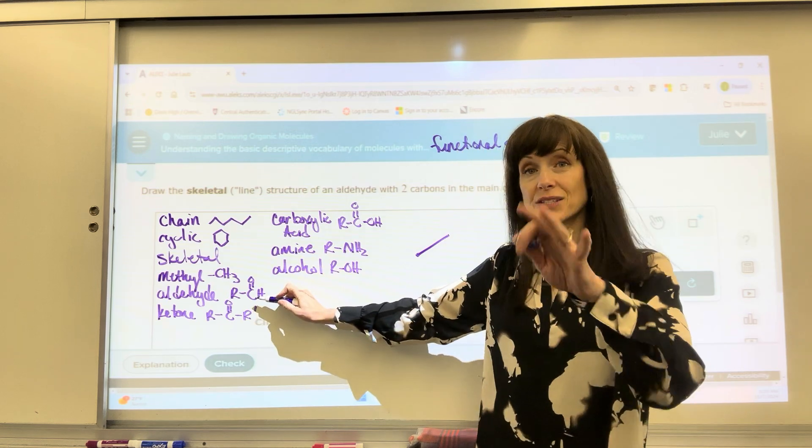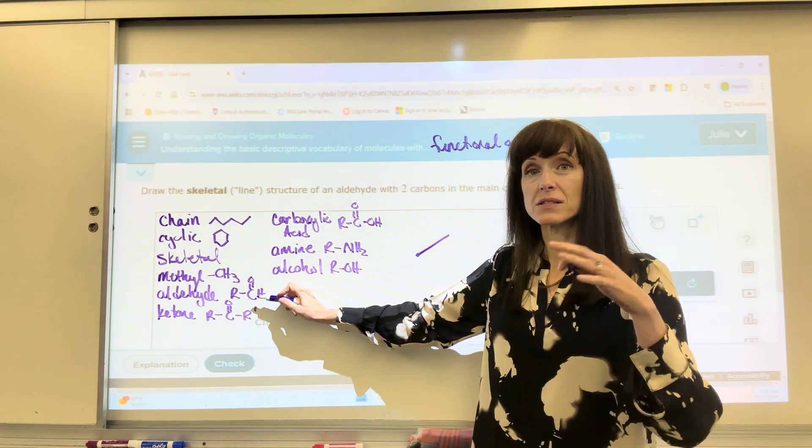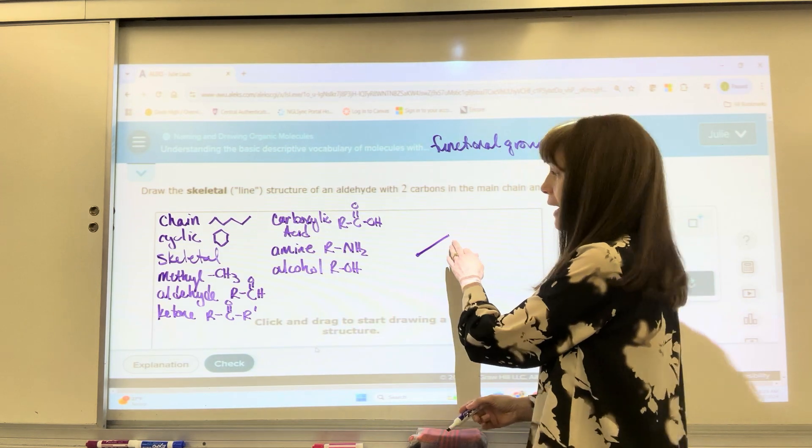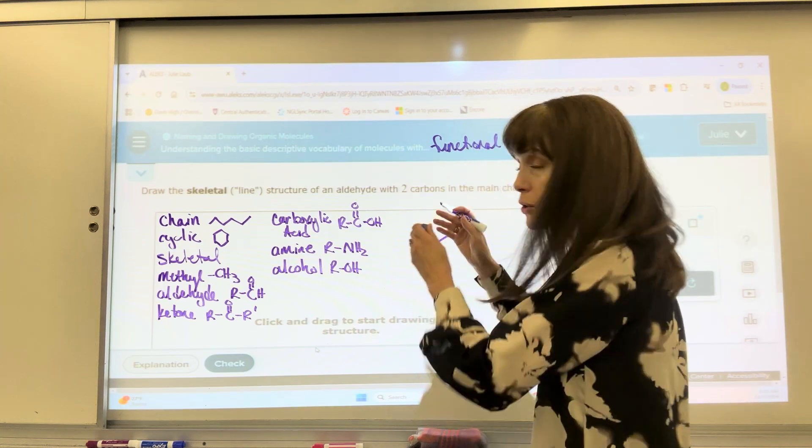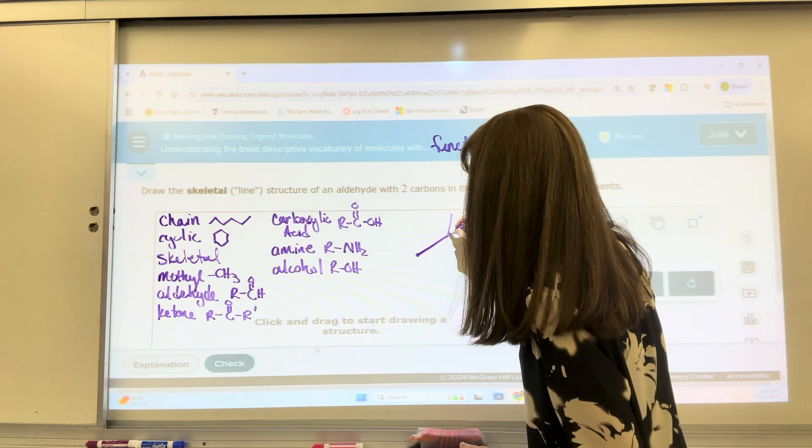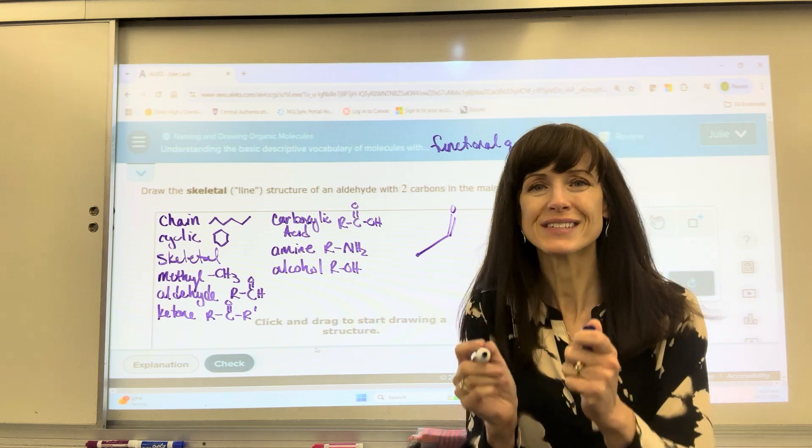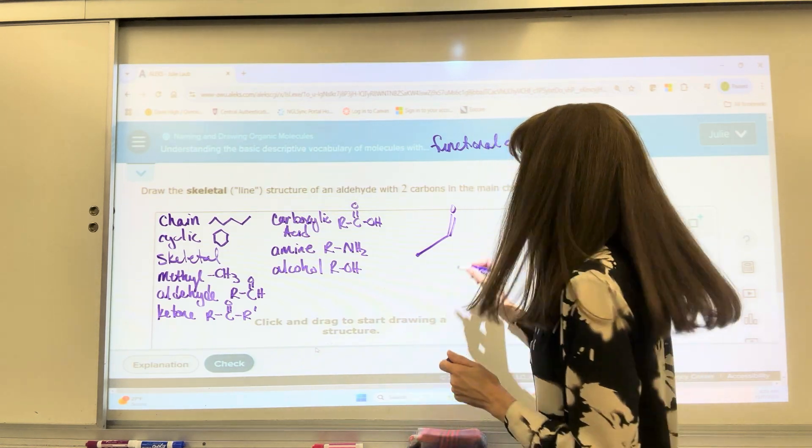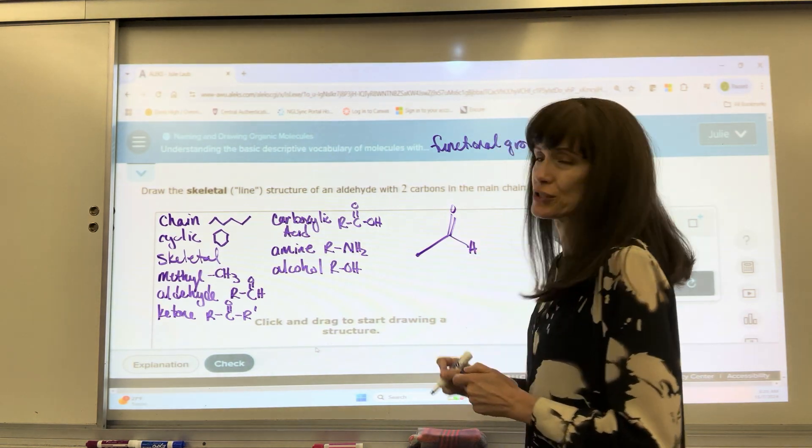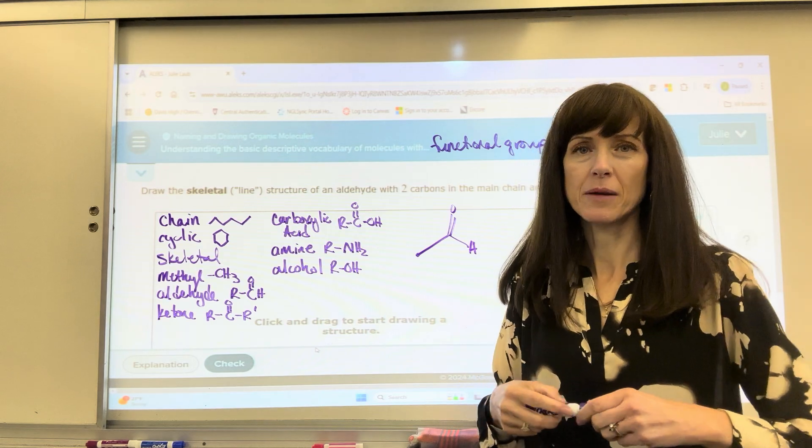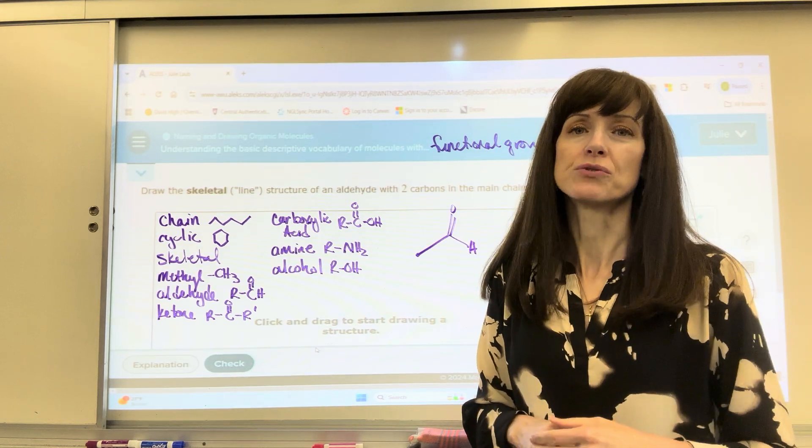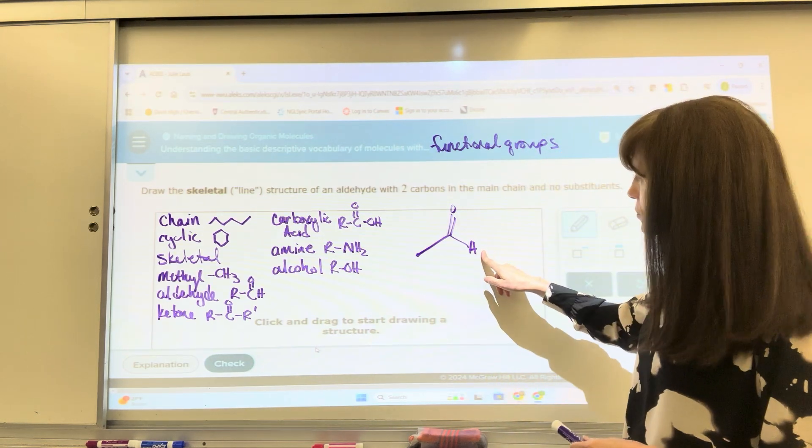Remember, it's the last carbon. It has a double bonded oxygen and a hydrogen. So here's my last carbon. I'm going to go away. Here's my double bonded oxygen. And then here's the exception on aldehydes. You draw the hydrogen. It's going to be the only time in our carbon chain that you draw that hydrogen. So there it is, draw that hydrogen.